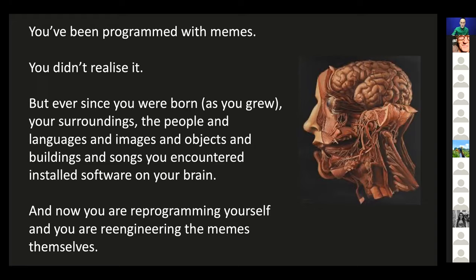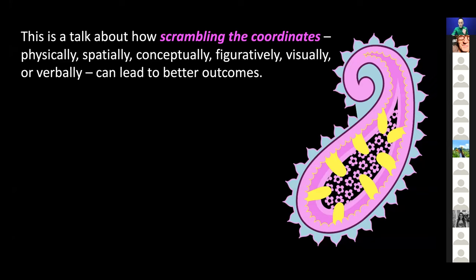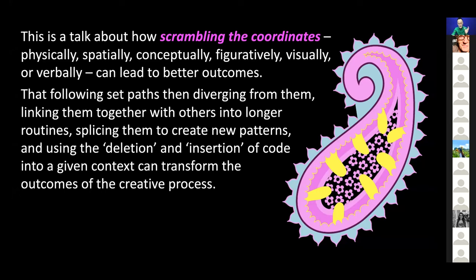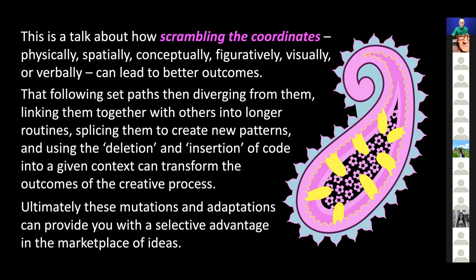This is a talk about how scrambling the coordinates — physically, spatially, conceptually, figuratively, or verbally — can lead to better design outcomes. Following set paths and then diverging from them, linking them together with others into longer routines, splicing them to create new patterns, and using deletion and insertion of code into a given context can transform the outcomes of the creative process. Ultimately, these mutations and adaptations can provide you with a selective advantage in the marketplace of ideas.